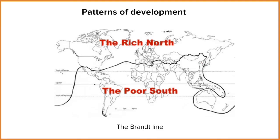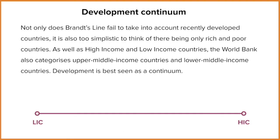It's also important to understand that development isn't just binary — it's not just you are rich or you are poor. In many cases there is a continuum of development, a line that we draw from the poorest to the richest. So it doesn't take into account recent developments in terms of a country's wealth, as well as other types of development. It's very simplistic and idealistic to think of it as only being a rich country or a poor country.